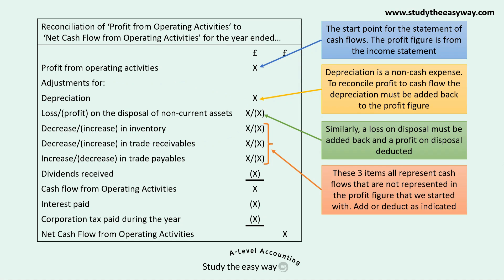Next we have items for inventory, trade receivables, and trade payables. These three items all represent cash flows that are not shown in the profit figure we started with, and these are going to be added or deducted as indicated. It's the change in the level of inventory, trade receivables, and trade payables from the beginning to the end of the financial year that is shown here. For inventory and trade receivables, a decrease is added or an increase is deducted. Note that it's the other way round for trade payables, where an increase is added and a decrease is deducted.